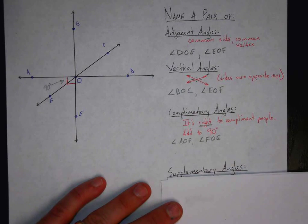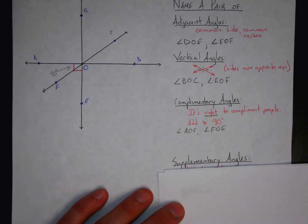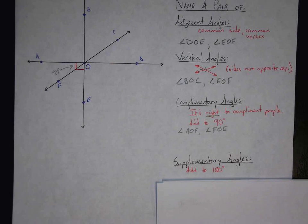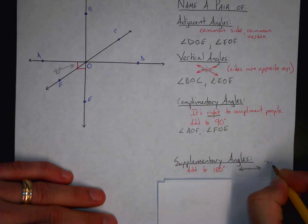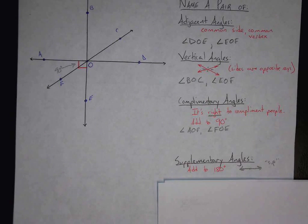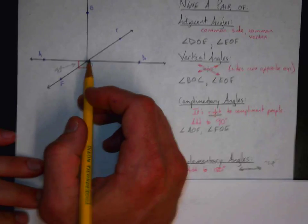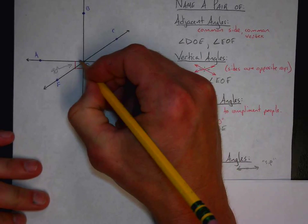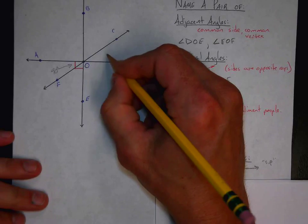Another vocabulary term: supplementary angles. It's easy to confuse complementary and supplementary, but supplementary angles add up to 180. Normally, whenever I recognize a straight line, I just say 'sup?' — so supplementary angles add up to 180 degrees. We can have multiple angles, but dealing with angle pairs — I'm saying name a pair of angles that are supplementary. Any two angles that can add to 180 degrees. So we can have angle AOC and angle AOF are supplementary. We have angle COD and angle COA that add to 180 degrees — any two angles that make a straight line.